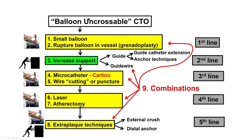So what to do next? This is the algorithm for balloon-uncrossable CTOs. We did try the Sapphire and the 1.5 mm balloon, including rupture of the balloon — the so-called grenadoplasty. The next step is typically to increase support using a guide catheter extension or anchoring techniques. If that doesn't work, use a specialized microcatheter such as the Tornus or the Turnpike Spiral, or use the wire-cutting technique, laser atherectomy, or various extraplaque techniques.